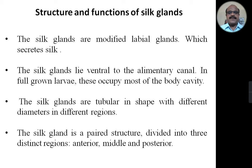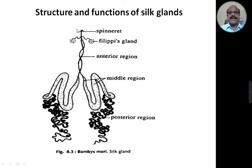The silk gland is a paired structure divided into three distinct regions, namely anterior region, middle region, and posterior region. Here you can see the structure of the silk gland. You can observe here this is the anterior region, this is the middle region, and this is the posterior region.